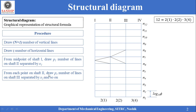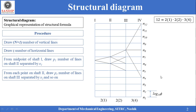From each point on shaft 2, draw p2 number of lines on shaft 3 separated by x2. In this structural formula p2 is equal to 2 and x2 is equal to 2. Thus we have to draw two lines separated by two speed steps from shaft 2 to shaft 3. This procedure has to be repeated for each point on shaft 2. For all the points on shaft 3 we have to draw three lines separated by four speed steps. The first speed step is at n12, the second speed step is at n8, and the third speed step is at n4, separated by four speed steps.